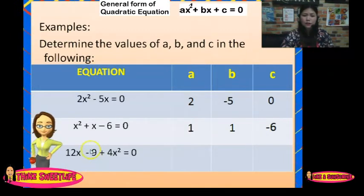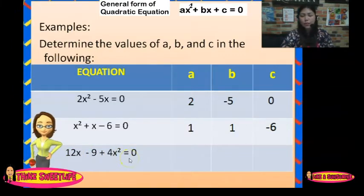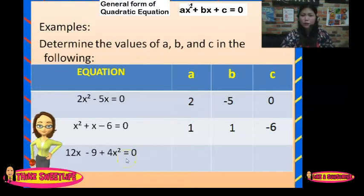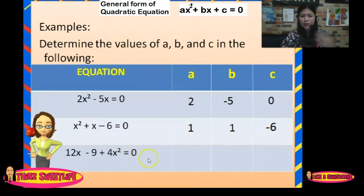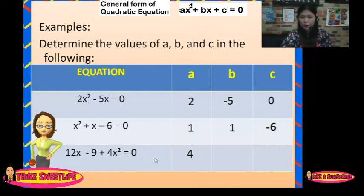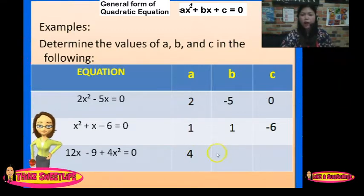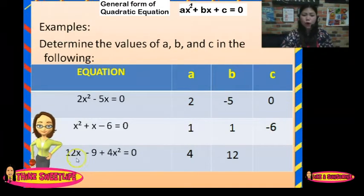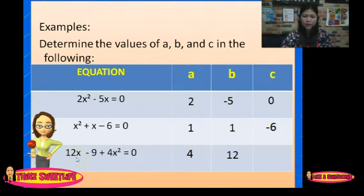How about the third equation? We have 12x minus 9 plus 4x squared equals 0. Always remember to arrange in general form from highest to lowest degree so it is easy to determine A, B, and C. The A here is 4 (positive 4), B is 12, and the constant C is negative 9.